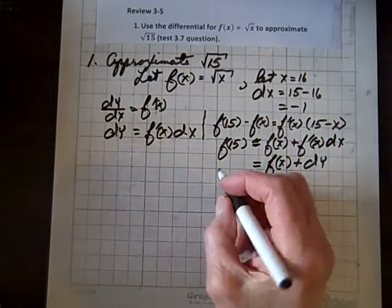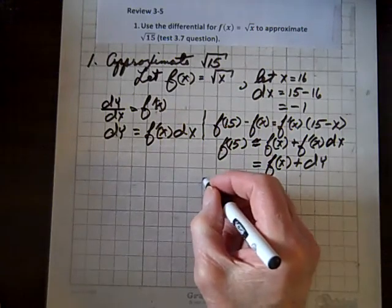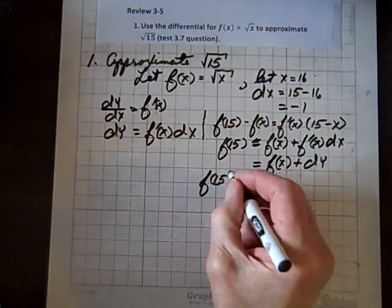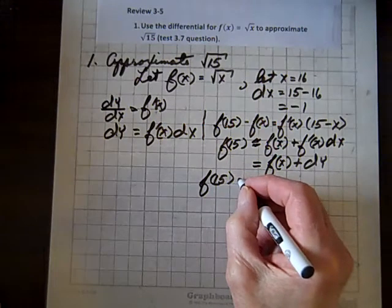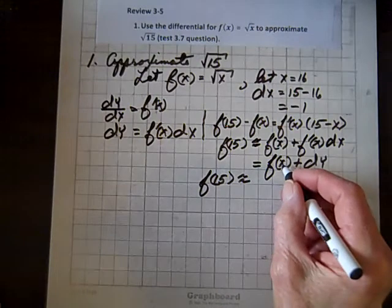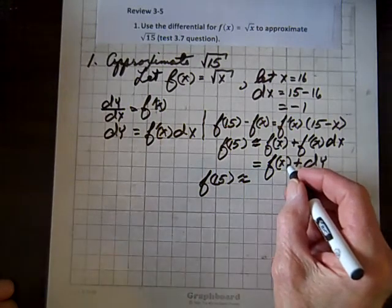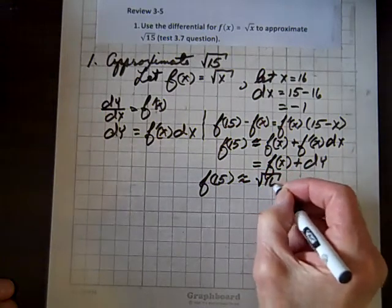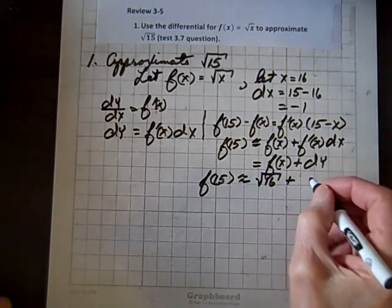Now let's go ahead and substitute our values. So we have f of 15 equals, approximately, f of x. Well, that's the square root of 16 plus dy.